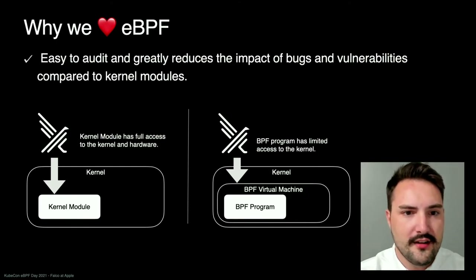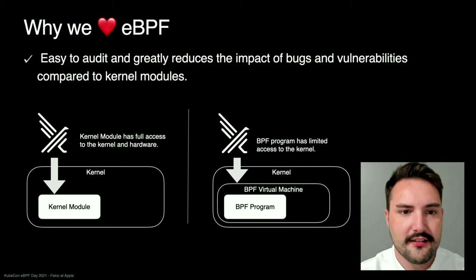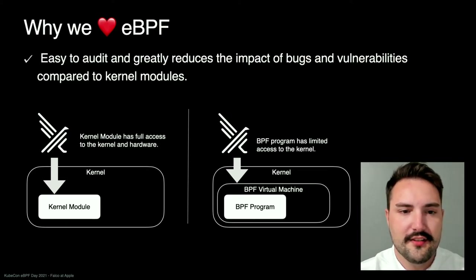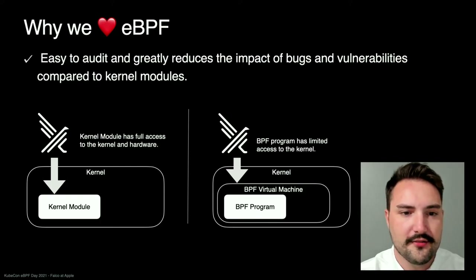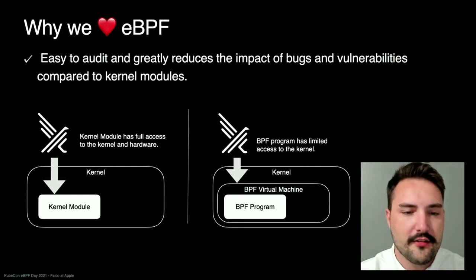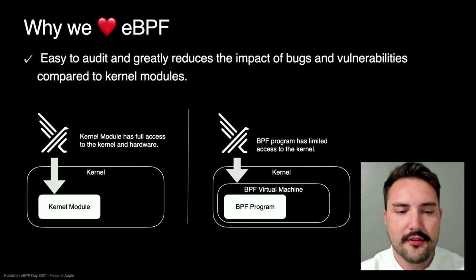Depending upon the EBPF program type, EBPF programs allow us to categorize the types of programs loaded into the Kernel so that each program could be given only the data and functionality it needs to complete its task. The new Falco EBPF probe, for example, is specifically a tracing program and only has access to tracing helper functions and data. In this way, the EBPF virtual machine provides a safe sandbox for the third-party code to run in without giving full access to the Kernel. Even though it runs in Kernel space, it still follows the principle of least privilege.